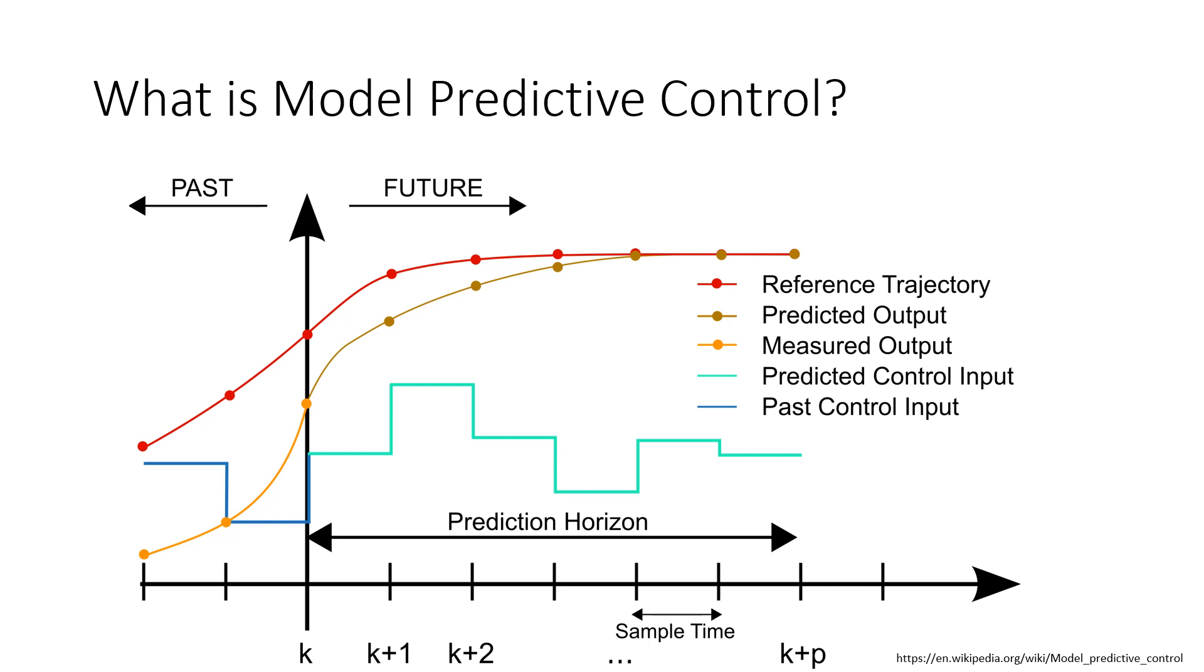This slide helps to further illustrate the process of model predictive control. At the current time k, the controller receives the measured output of the system. The controller solves an optimization problem to predict the optimum output of the system to reach the reference output over some constant time interval. This time interval is called the prediction horizon and it is how far the controller looks into the future. The controller then predicts the control inputs needed for the optimal output over the time interval. The controller then feeds this input into the plant as shown by the arrow. At the next time step, the controller repeats the process over the next time interval. The output is measured, the new optimum output and necessary input is predicted, the first input is delivered to the plant, and the process is repeated again and again.